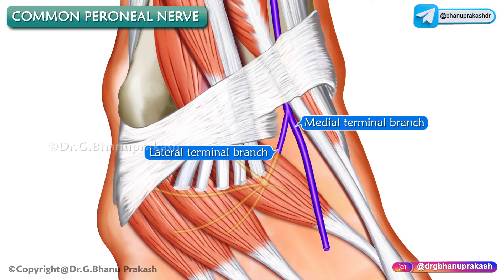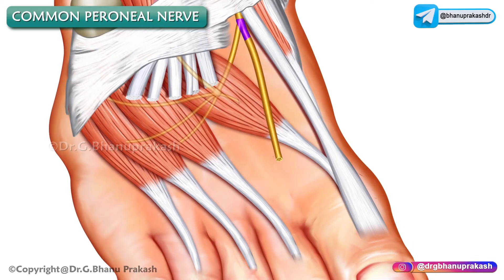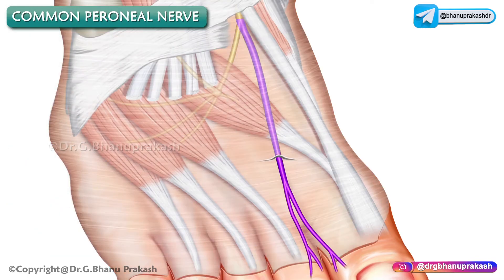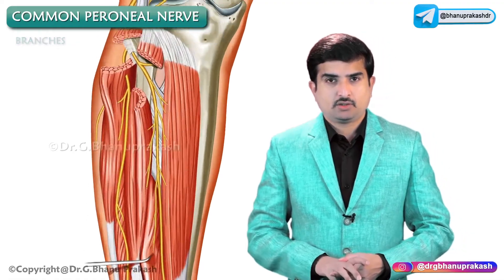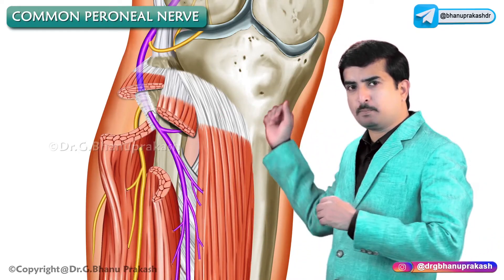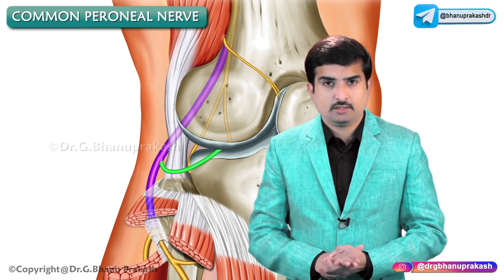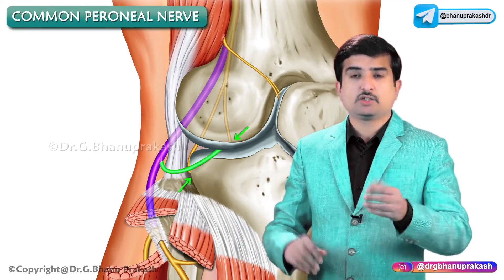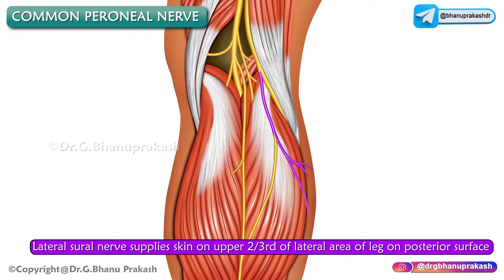The deep peroneal nerve ends by dividing into lateral and medial terminal branches near the ankle joint. The lateral terminal branch runs laterally and ends deep to the extensor digitorum brevis as a pseudo-ganglion. The medial terminal branch runs forwards and ends at the first interdigital cleft. Regarding branches of the common peroneal nerve before it divides: one is the articular branch, given off to the knee and superior tibiofibular joint.